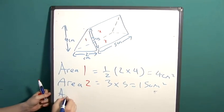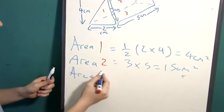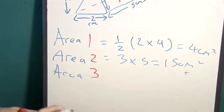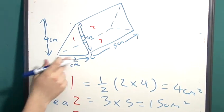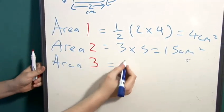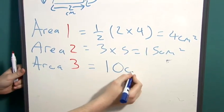Finally, the area of three, this base here is five multiplied by the base of the triangle, which is two, which is ten centimetres squared.